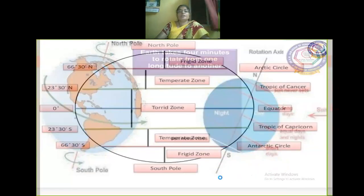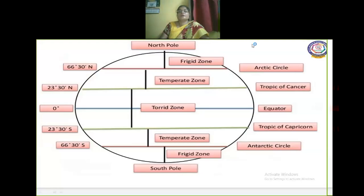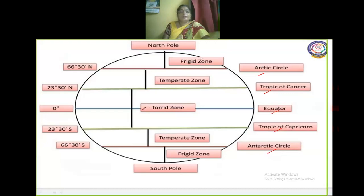Now we are going to see the major latitudes and how the climatic zones appear. The climatic zones are determined by latitudes. The Arctic Circle, Tropic of Cancer, Equator, Tropic of Capricorn, and Antarctic Circle are the various latitudes, each carrying specific degree values that divide the earth. The equator is called the torrid zone where the sun's rays fall straight.